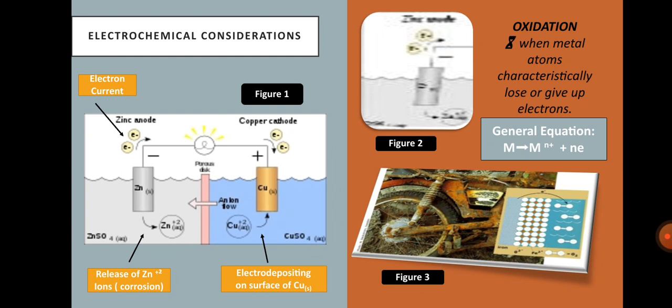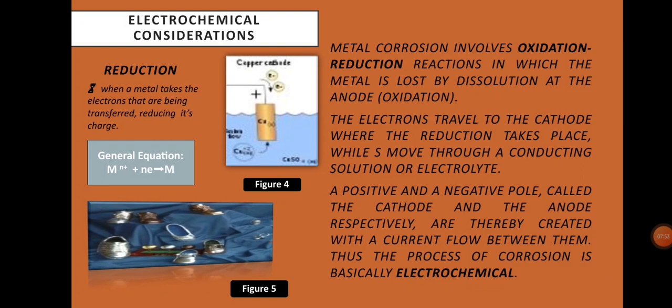Oxidation: when metal atoms characteristically lose or give up electrons. Reduction: when a metal takes the electrons that are being transferred, reducing its charge. Metal corrosion involves oxidation-reduction, a reaction in which the metal is lost by dissolution at the anode. The electrons travel to the cathode where reduction takes place, while ions move through a conducting solution or electrolyte. A positive and a negative pole — the cathode and anode respectively — are created with a current flow between them. Thus, the process of corrosion is basically electrochemical.